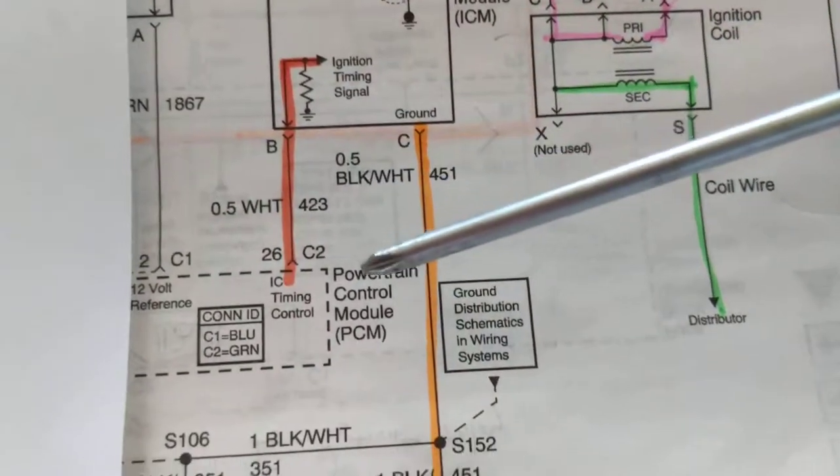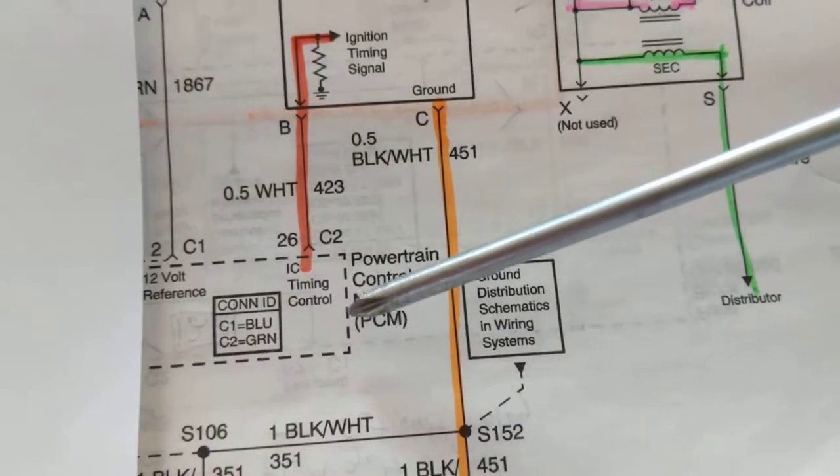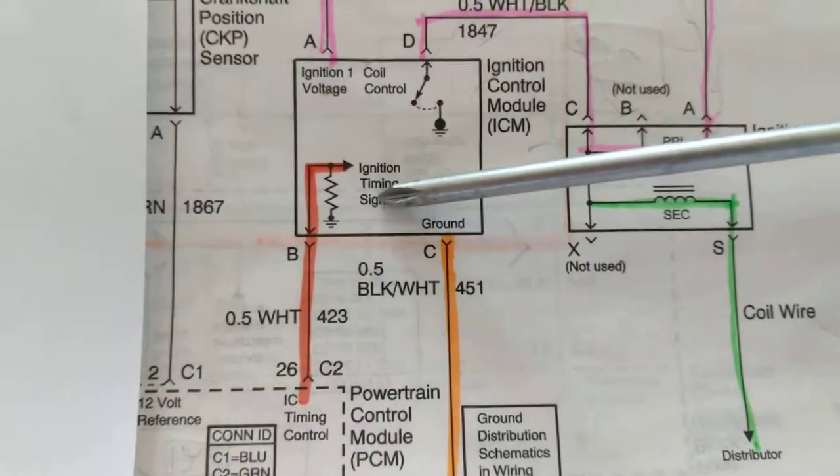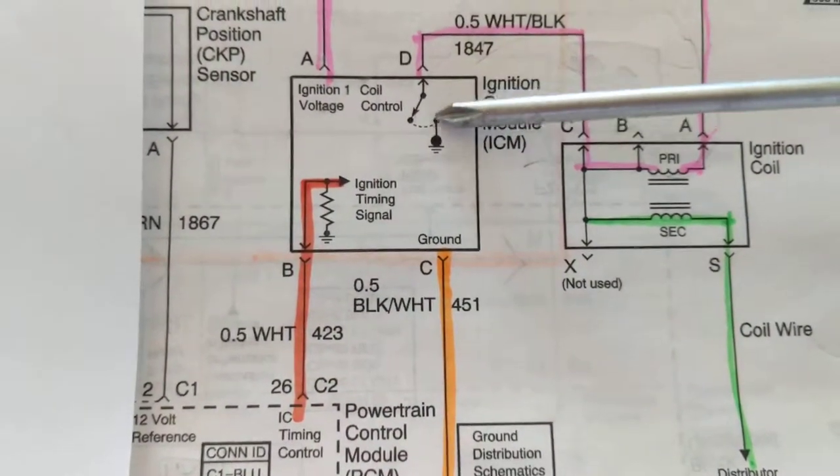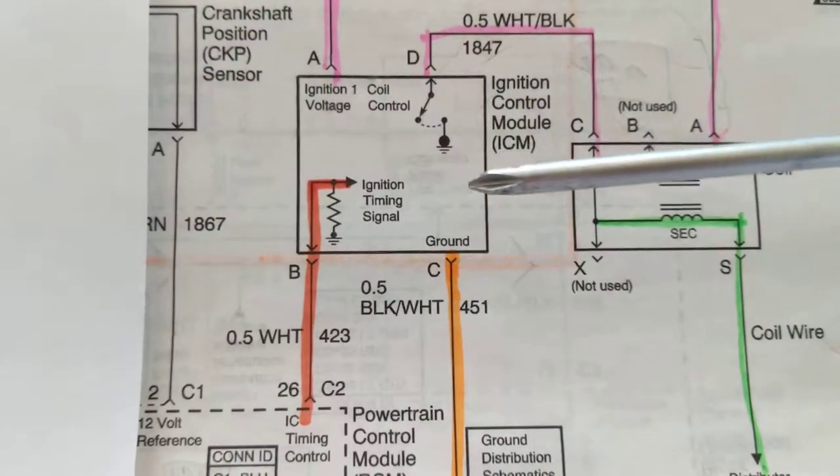Now the question is how much and when do you do it? That's why we have the PCM. The PCM decides when to toggle the coil control. This could be a transistor or anything based on all the input from sensors and information.